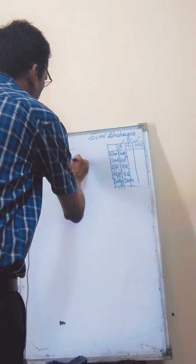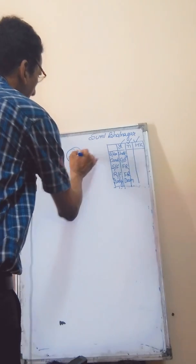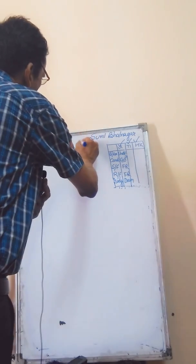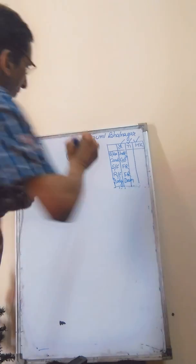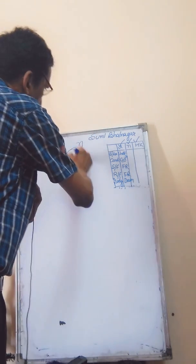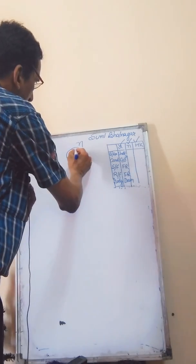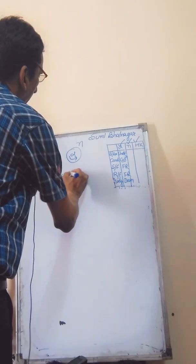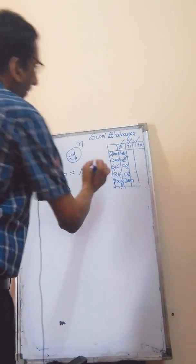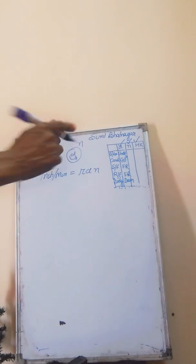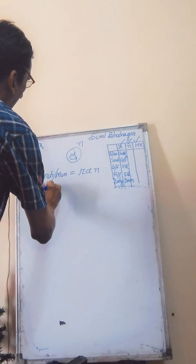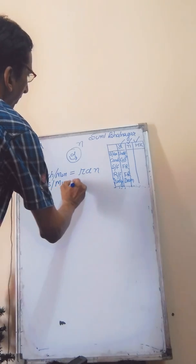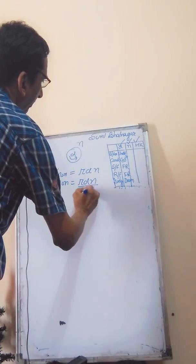Now friends, if this is the roller having D diameter and N is the RPM, then if D is the diameter in inches and N is the RPM of the roller, the inches per minute delivered will be π×D×N. If I want to convert it into yards per minute, then it will be π×D×N divided by 36.